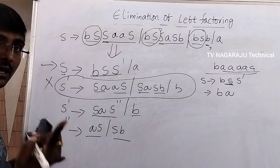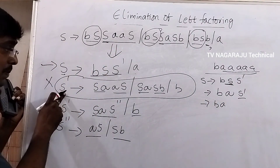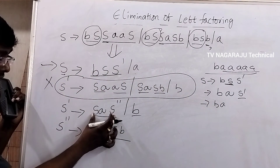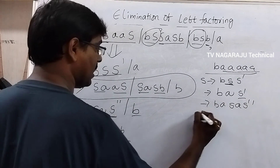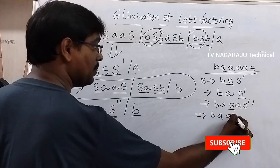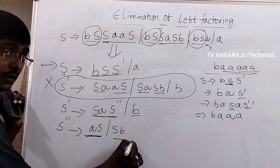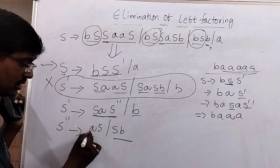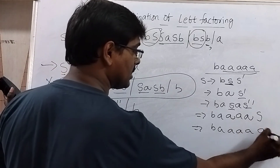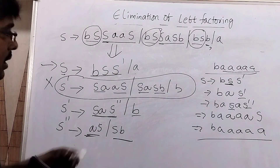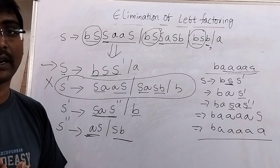Depending upon the string, S is replaced with either aS or simply a. S-dash is replaced with S-a S-double-dash. Then b-a is matched, a is replaced, and S-double-dash is replaced with aS. We continue until the entire string is derived. In top-down parsing, eliminating left factoring makes the derivation of this string very easy. Thank you.